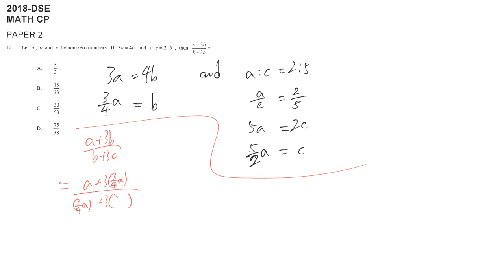And c is 5 over 2a. You may find that it's a little bit trouble, but just consider this is some fraction and you may use calculator. So 9 over 4a, this is 3 over 4a, and this is 15 over 2a.